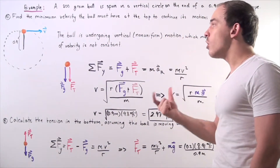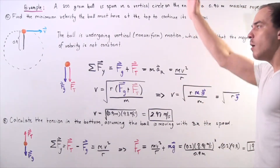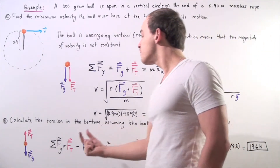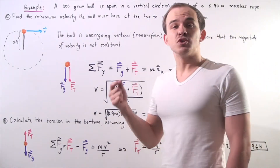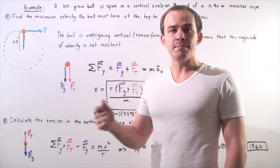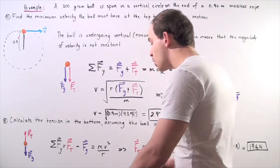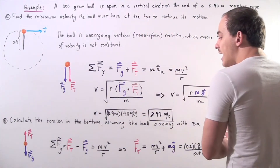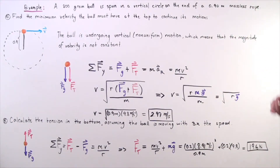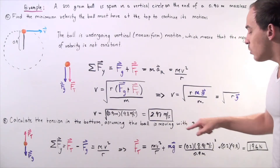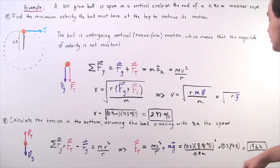Summing all forces along the y-axis, choosing upward as positive and downward as negative: tension minus force of gravity equals mass times centripetal acceleration, which equals mass times V-squared over R. Solving for tension, we bring all other terms to the right side: tension equals M times V-squared divided by R, plus M times g. Our velocity is 8.91 meters per second.